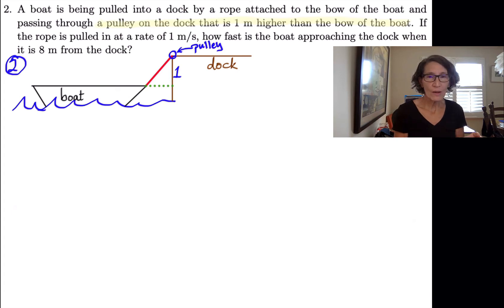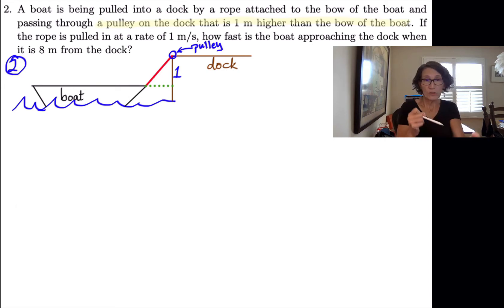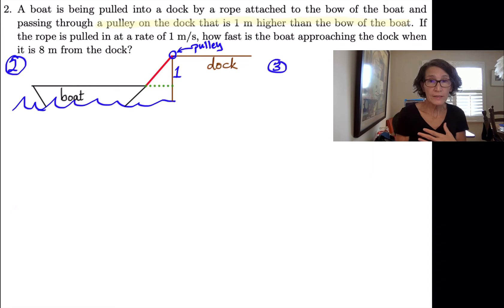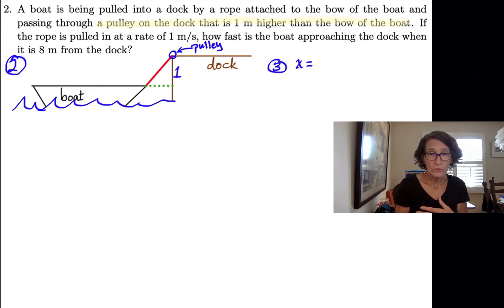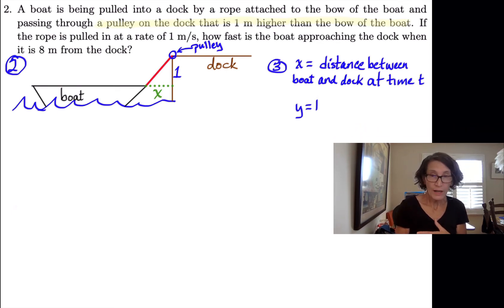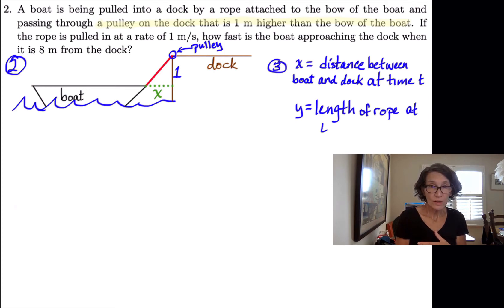The things that are changing are the length of that green dotted line because the boat is approaching the dock, so that dotted green line is getting shorter. Also, the length of rope is decreasing because somebody's pulling the boat in. The length of rope is decreasing; the distance between the boat and the dock is decreasing. So those are changing, and we're going to label those with variables. That's step three — we're going to name the variables. Both of those things are shrinking; they're getting smaller.